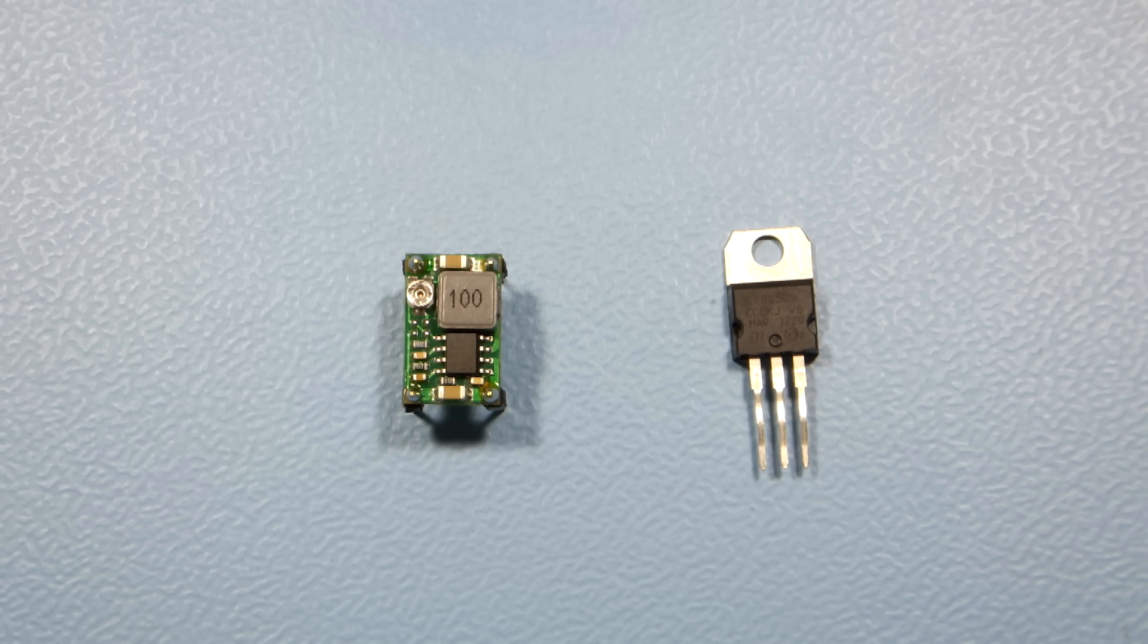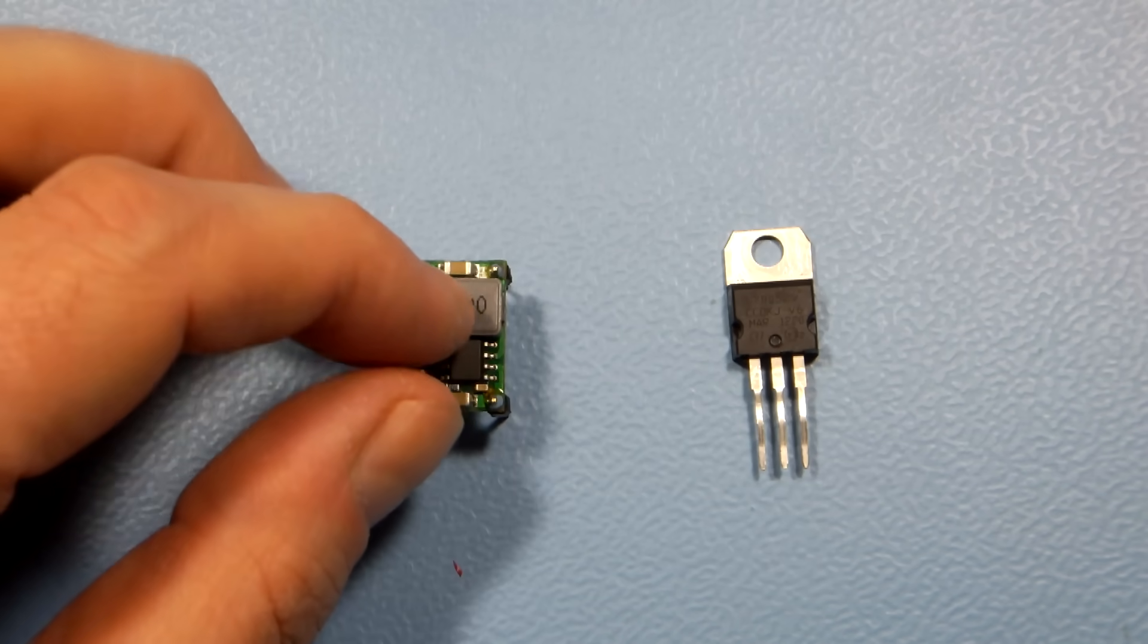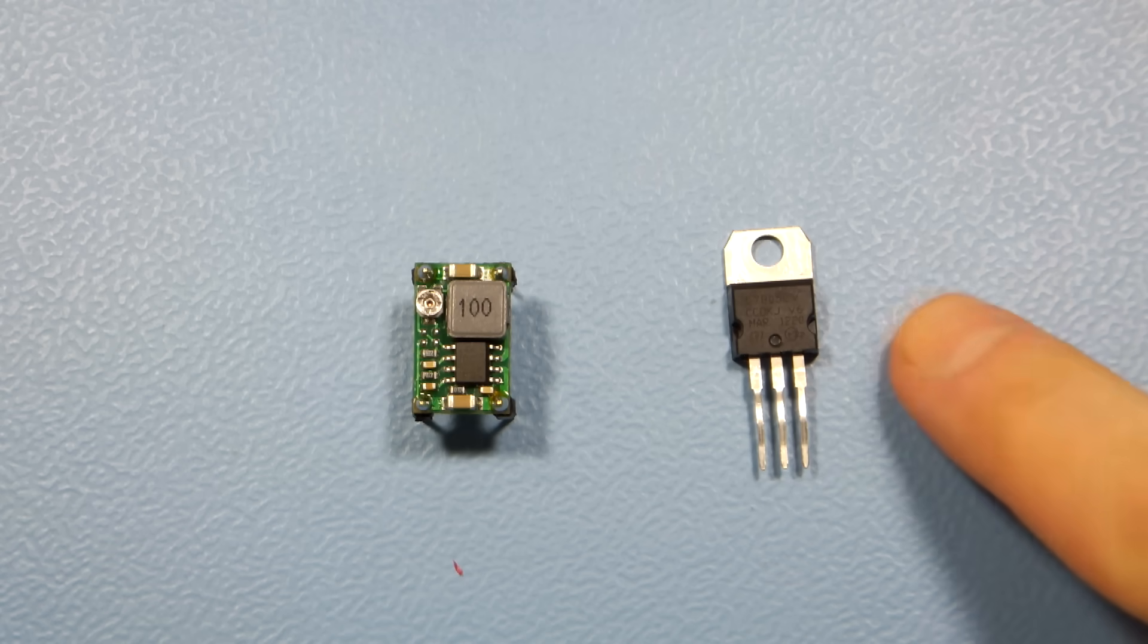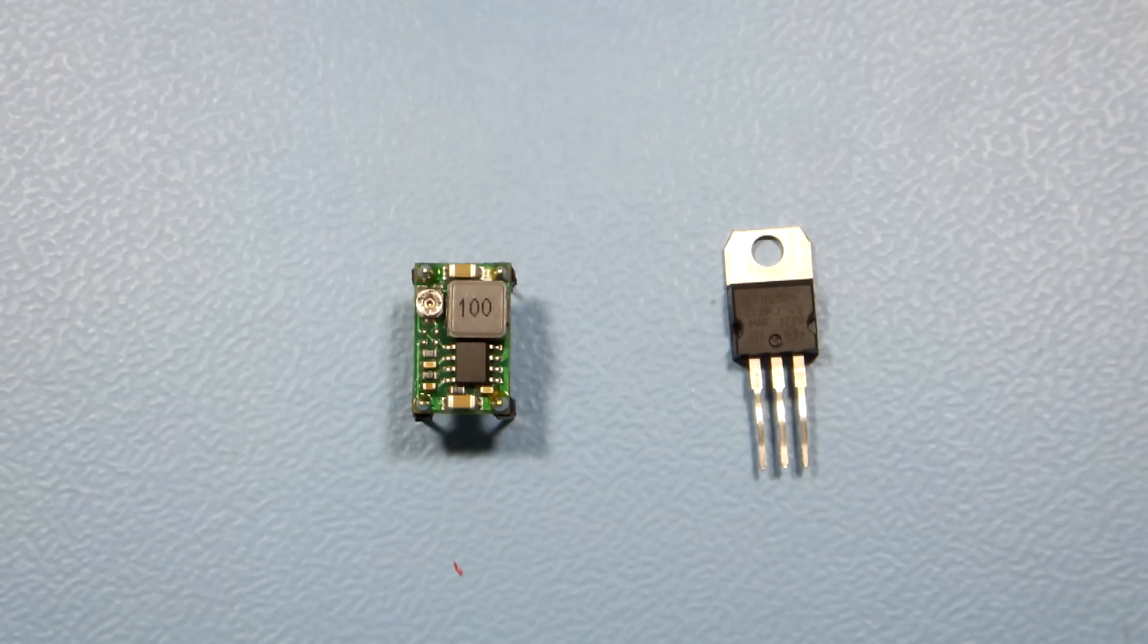There is one more thing. Because buck converters use coils, they may cause interference in your circuits, so if you're building something sensitive like a radio for example, you should grab a linear voltage regulator and live with all its drawbacks.